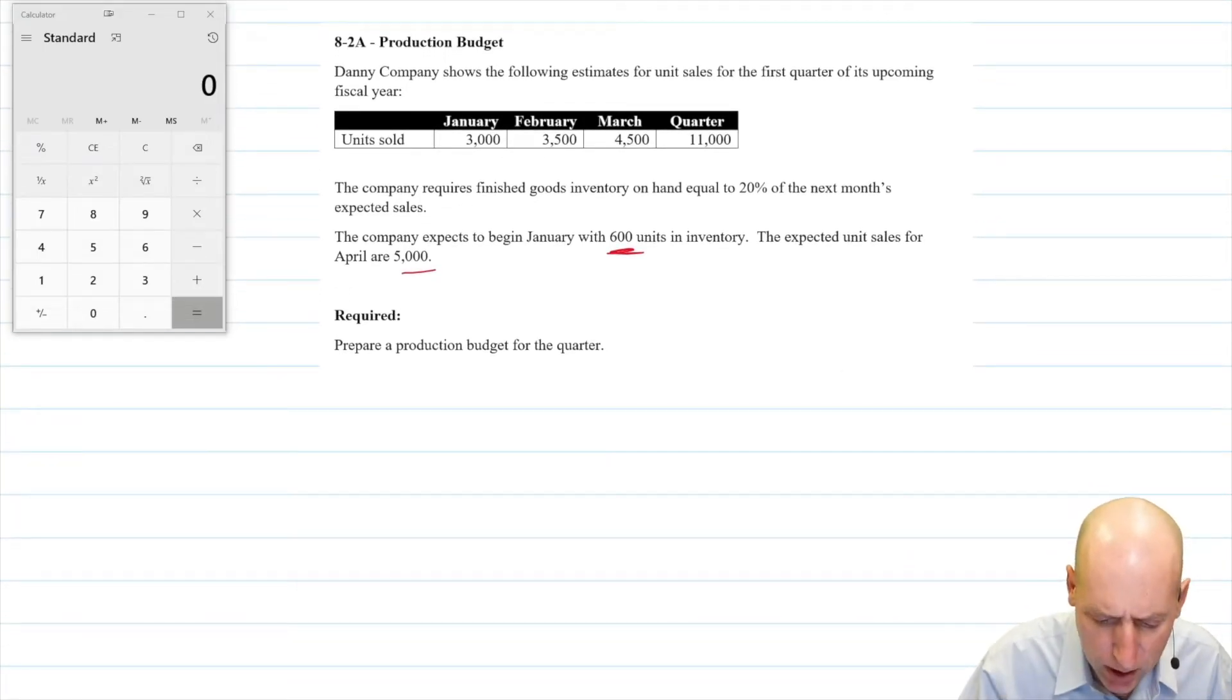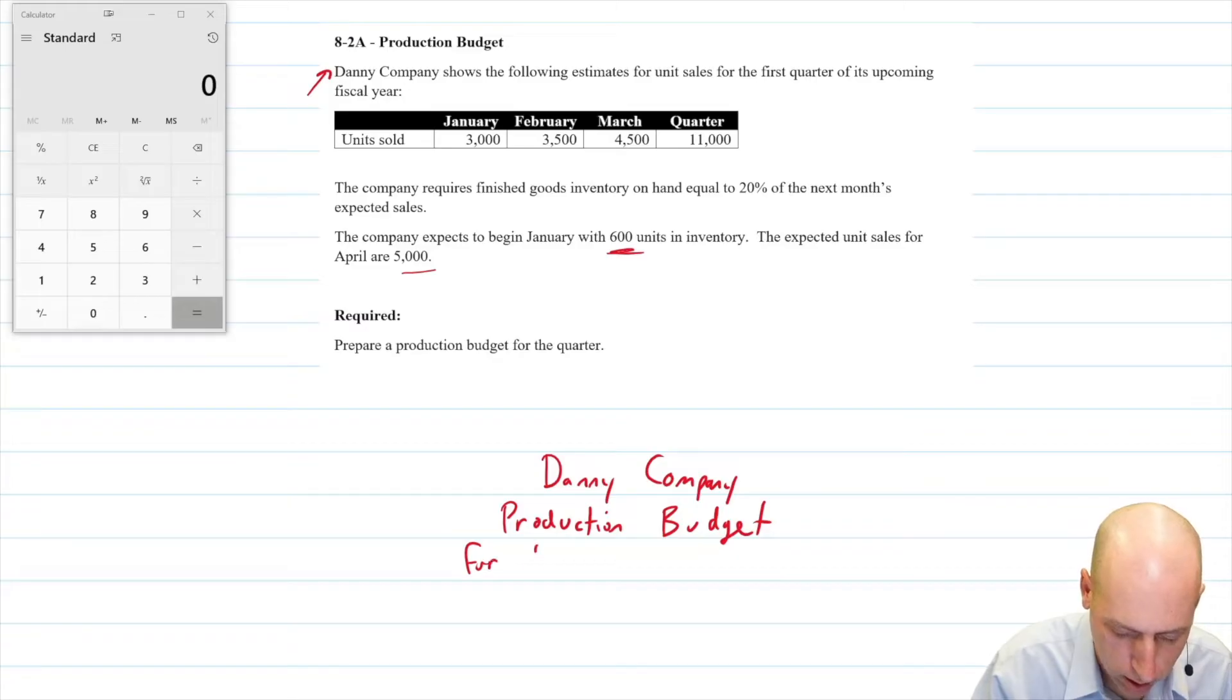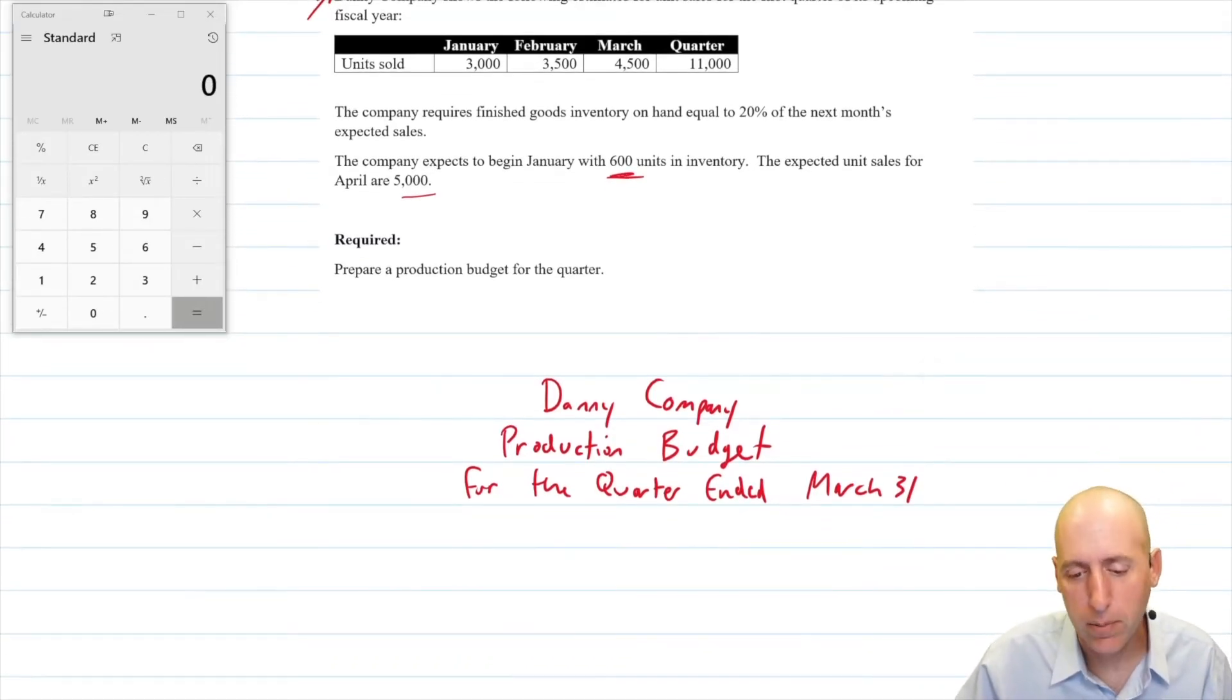Let's begin the problem with a three line title. The name of our company is Danny company. We are preparing a production budget. And this is for the quarter ended January, February, March, March 31st. We've got ourselves a beautiful title. Now the starting point for a production budget is your sales. If you're going to sell 3000 units, you better make 3000 units. So that's going to be our starting point. We've got Jan, Feb, March, and quarter. The quarters are kind of our totals column here.